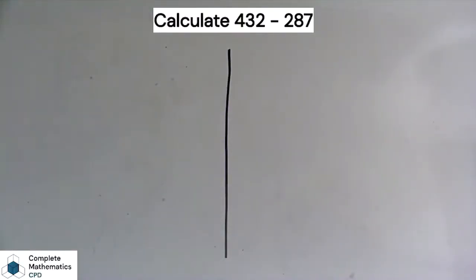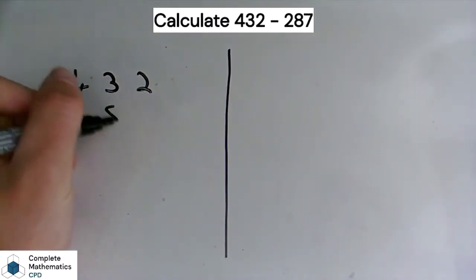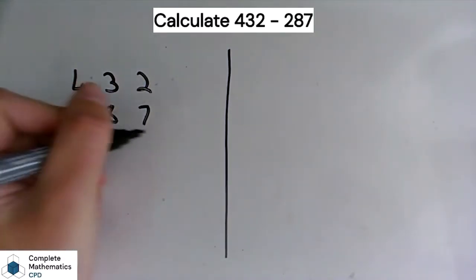Hello and welcome to another CPD short from Complete Mathematics. This time I'm going to be looking at an alternative method for subtraction. To begin with, we're going to do the traditional method. So 432 minus 287, let's put our column headings in.